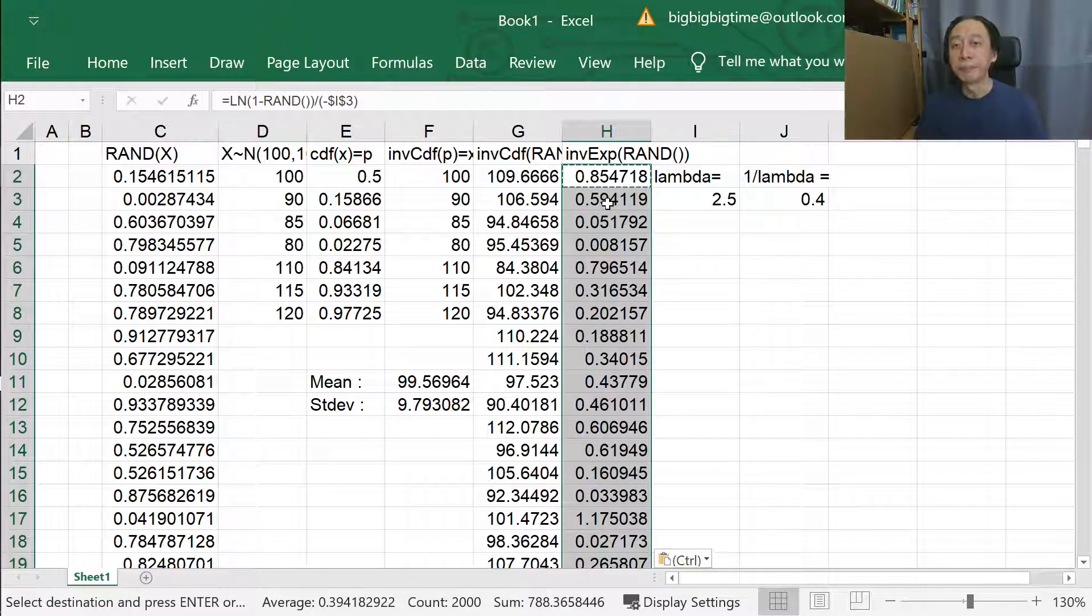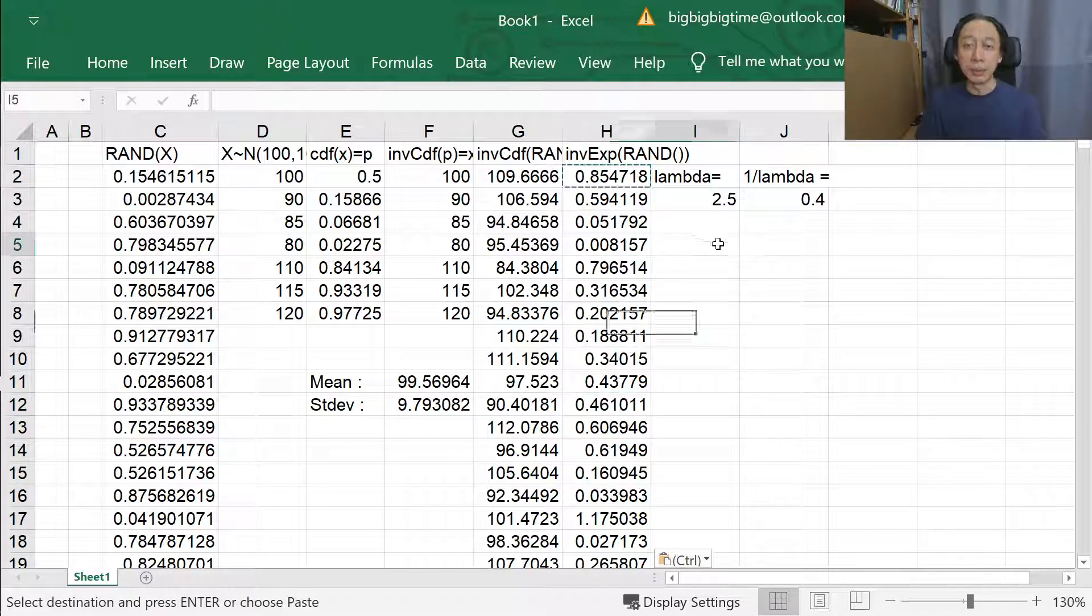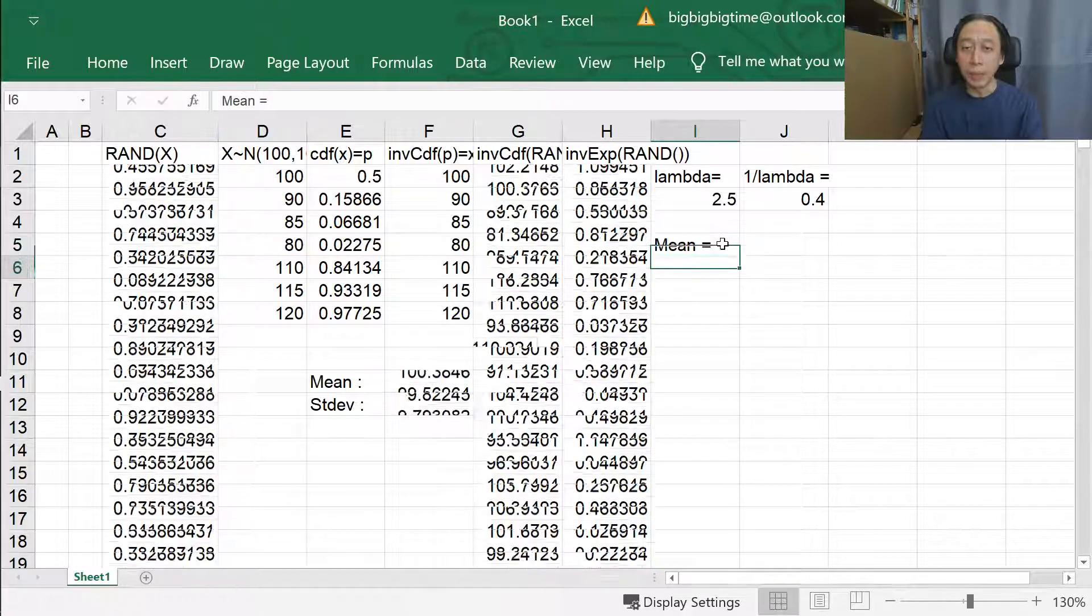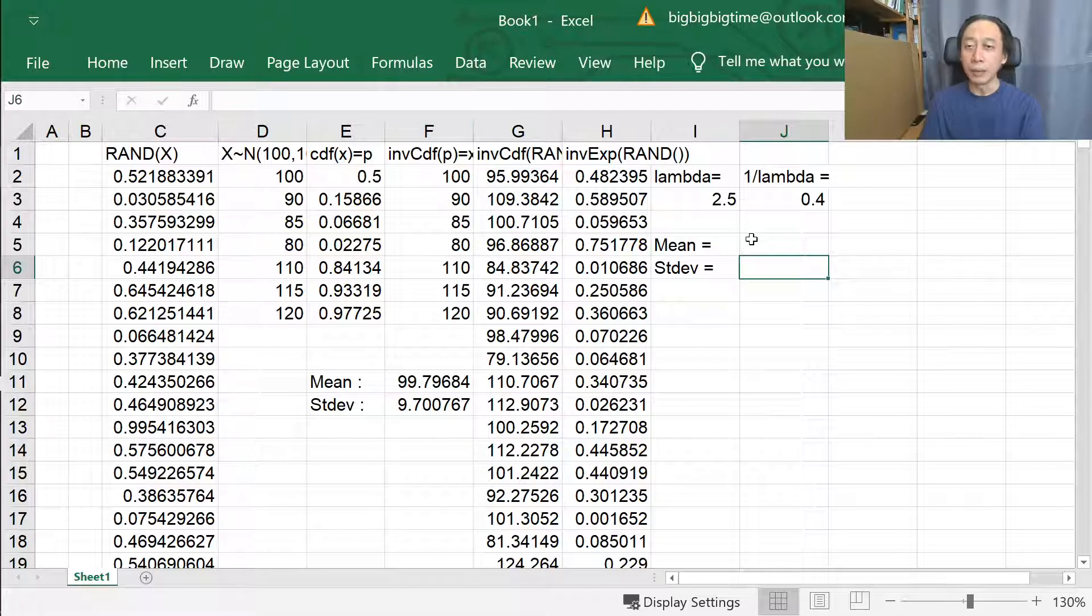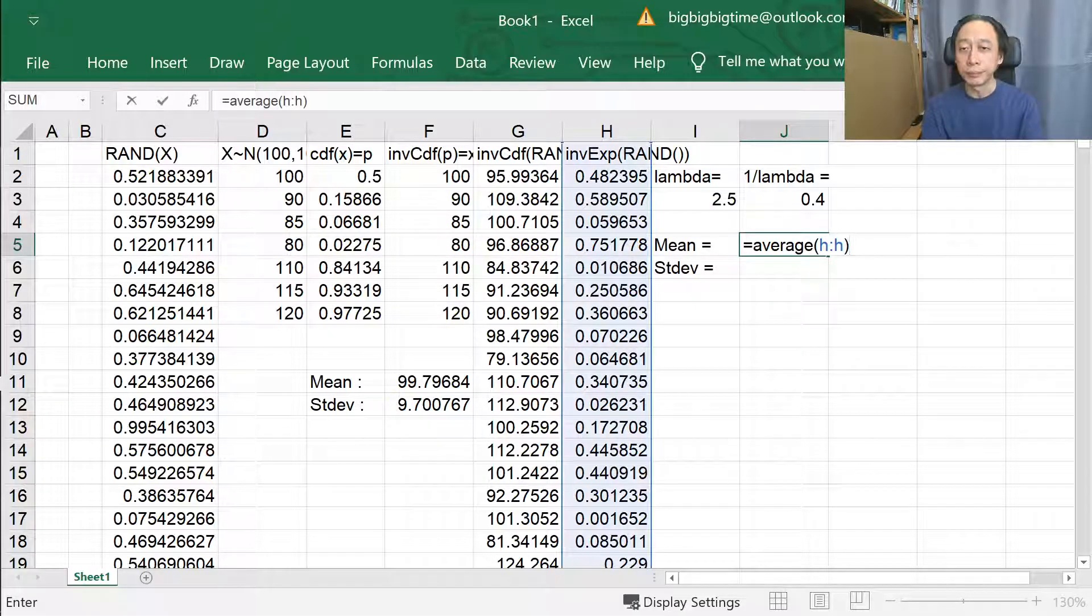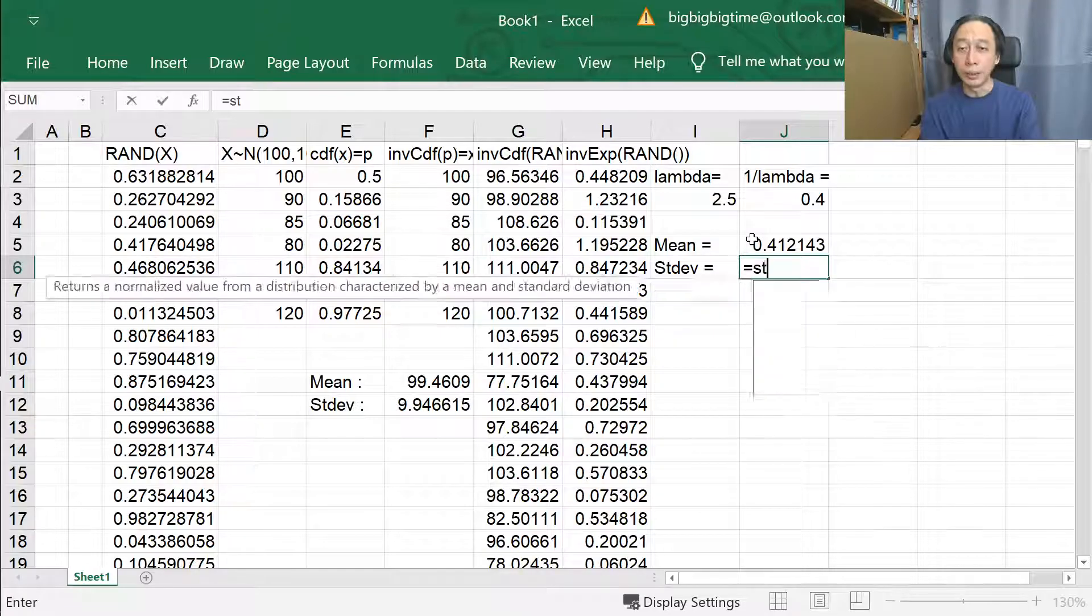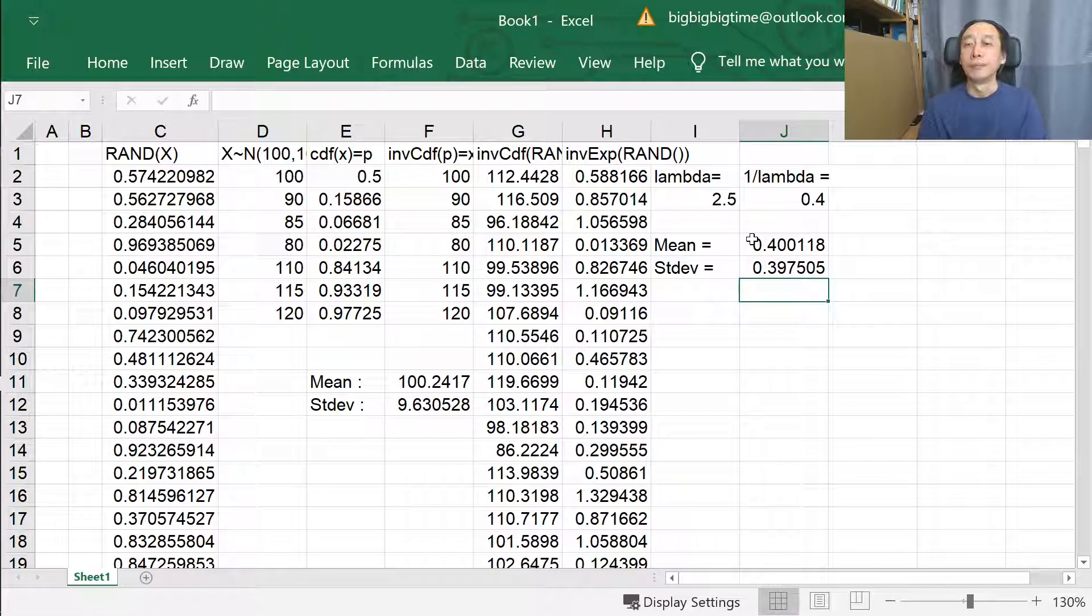What are these numbers? Are they making sense at all? Let's see. The mean and the standard deviation. The mean of the average of column H. The standard deviation of column H. There you go.